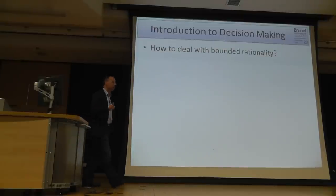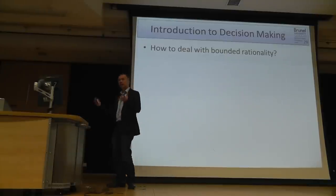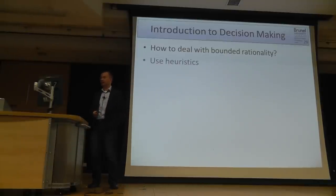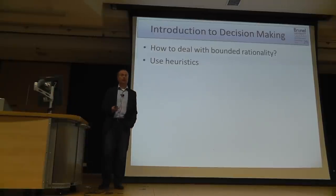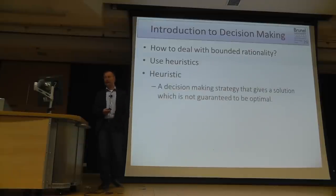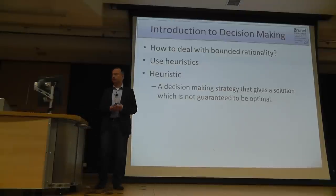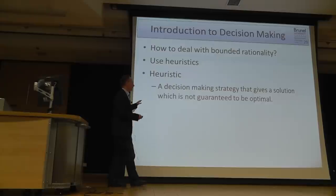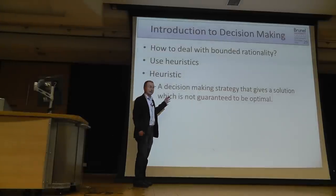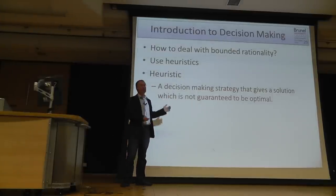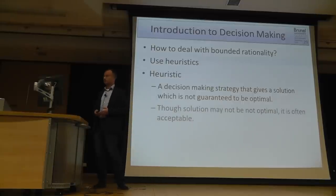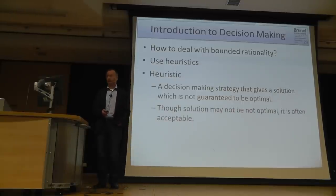How can we deal with this bounded rationality? The answer is the same as in problem solving: we use heuristics. A heuristic in this context is a strategy to come to decisions which gives us a solution that is most likely acceptable and good, but is not guaranteed to be perfect and optimal. Often it's sufficient for our aims, and the advantage is that it greatly reduces cognitive load.